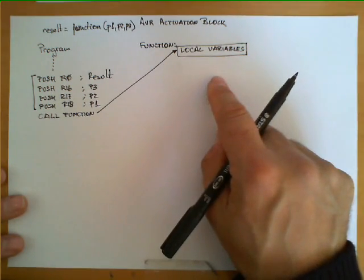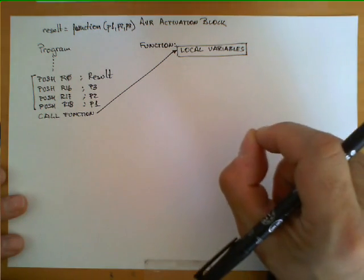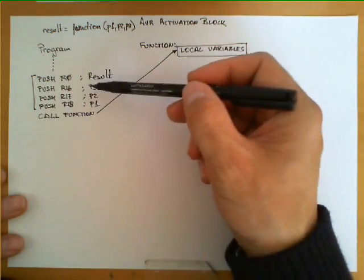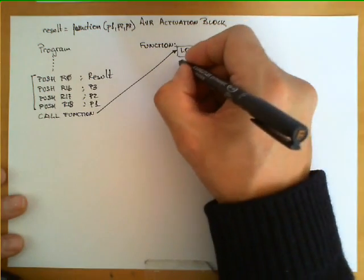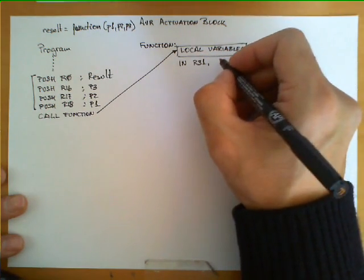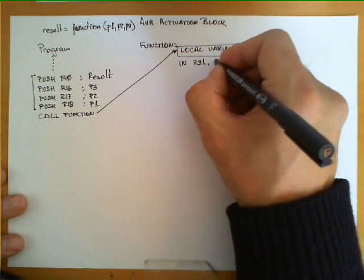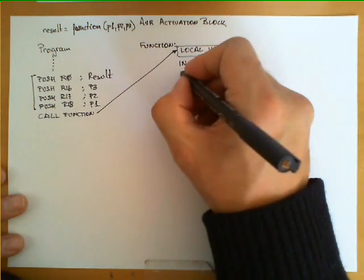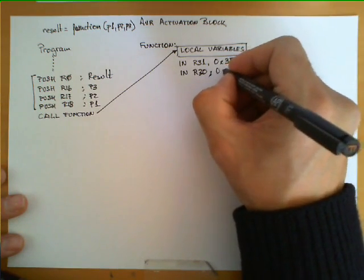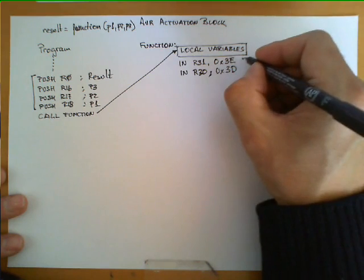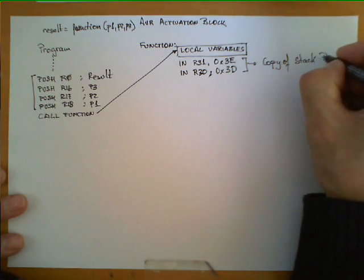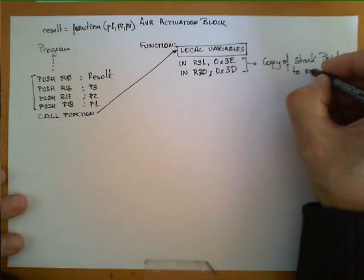After that, what we need to do for the activation block is to create a duplicate of the stack pointer in register Z. We do that because register Z is going to be used to access both the parameters and the result. In AVR, we achieve that with two IN instructions: IN R31 — the upper part of Z — from I/O port 0x3E, and IN R30 — the lower part of Z — from I/O port 0x3D. This basically copies the stack pointer to register Z.